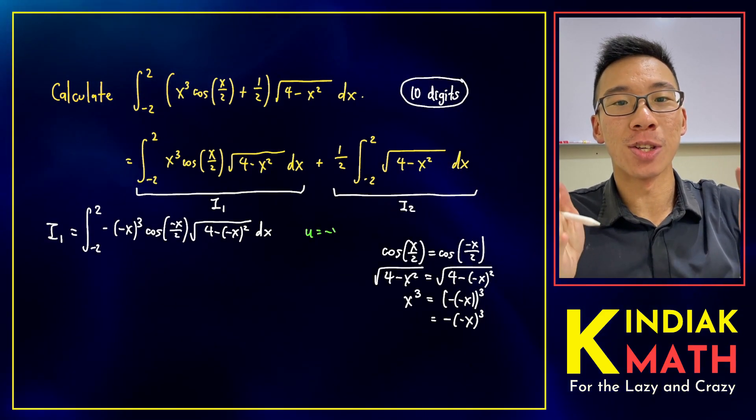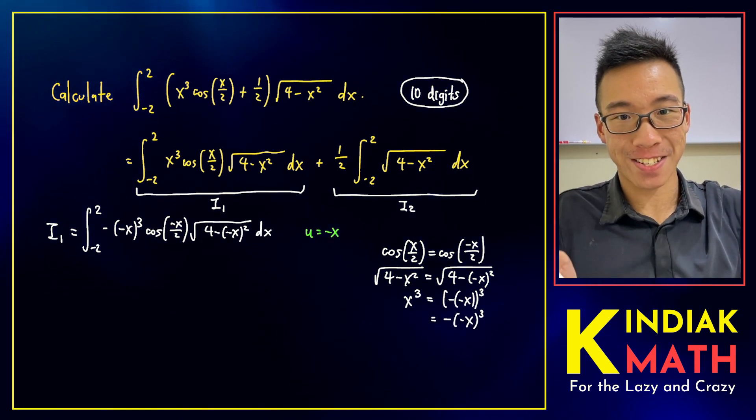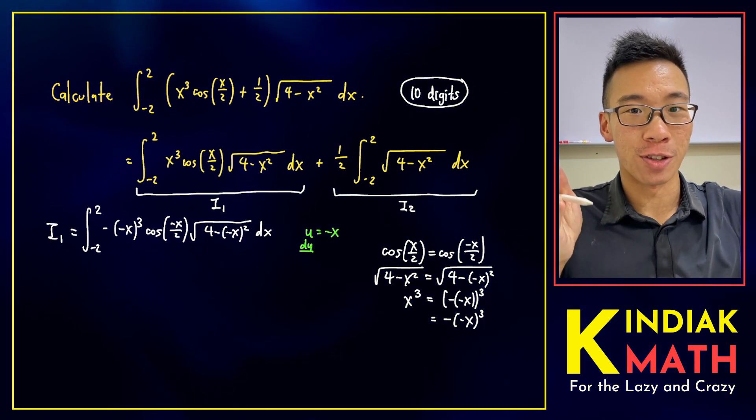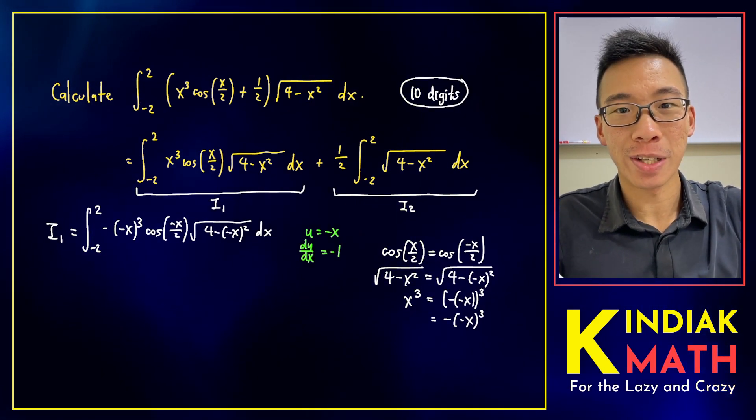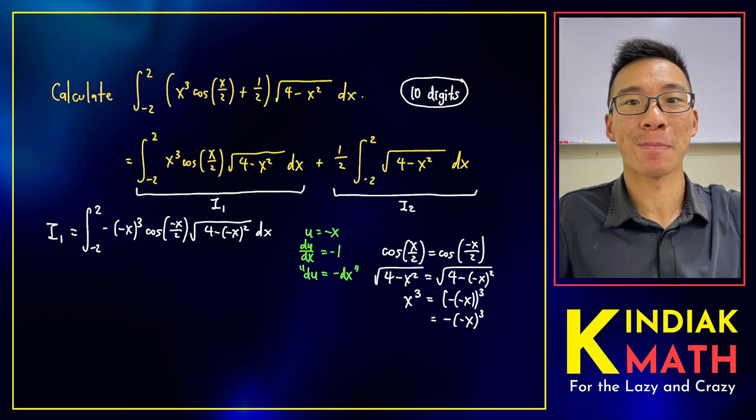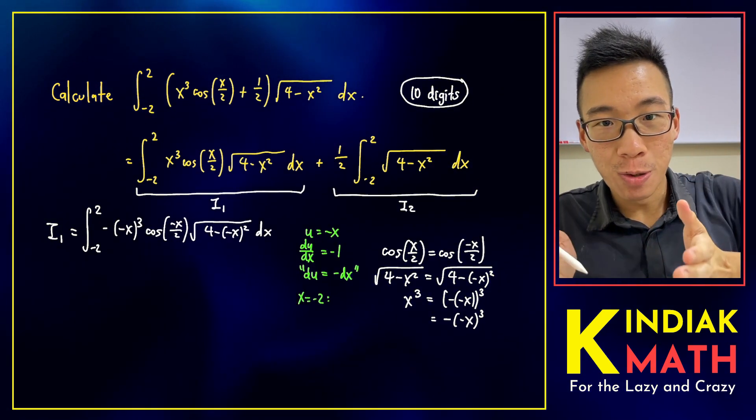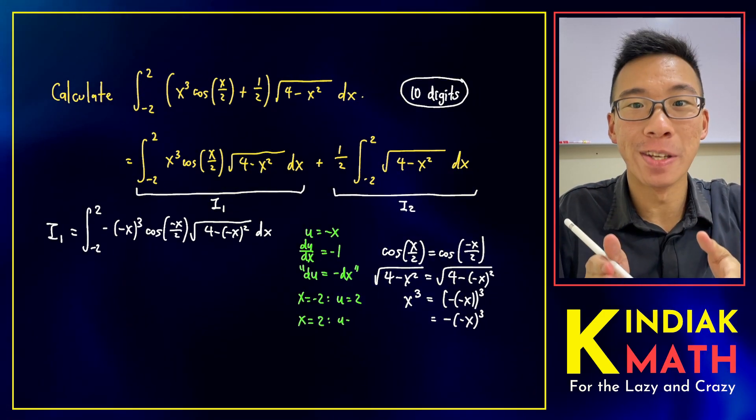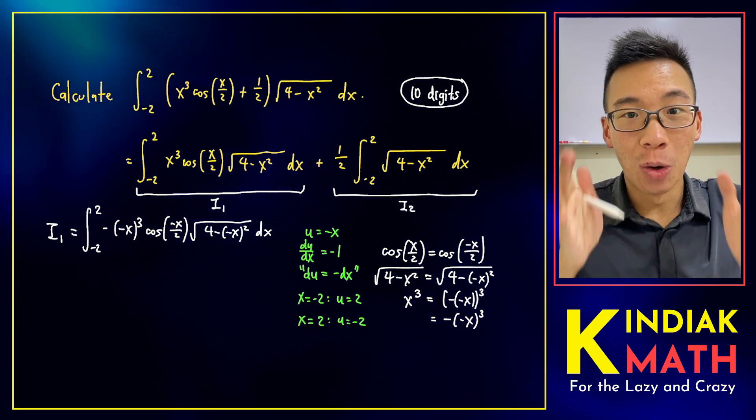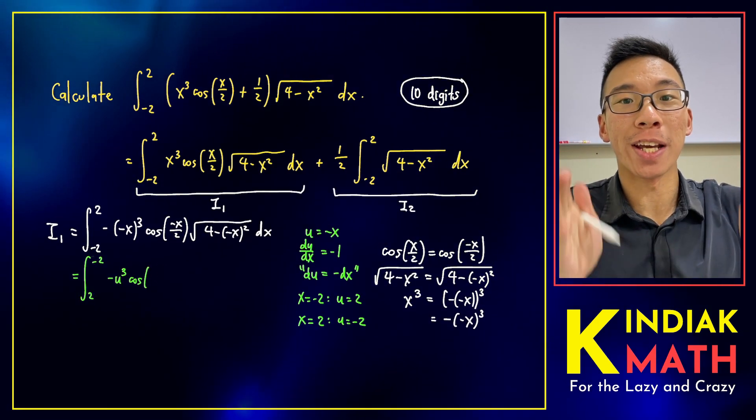Let's try the substitution u equals negative of x. Then the derivative of u is going to be negative 1, and du can be thought of as negative of dx. When x equals to negative of 2, u will be 2. And when x is 2, then u will be negative of 2. We can go ahead and make our following substitutions.